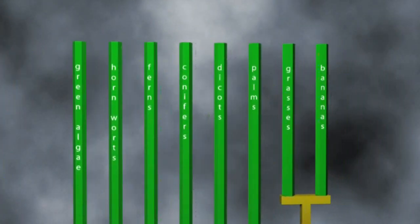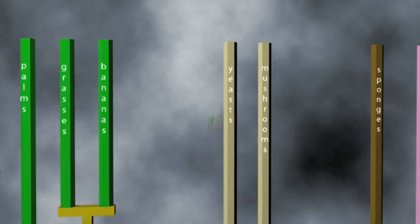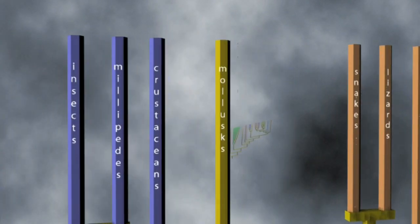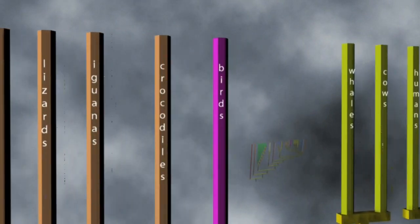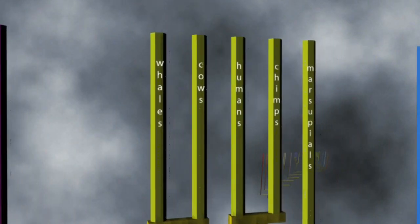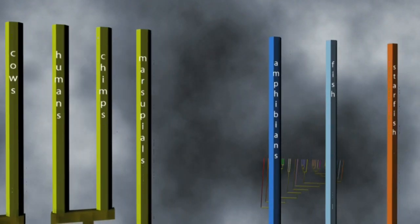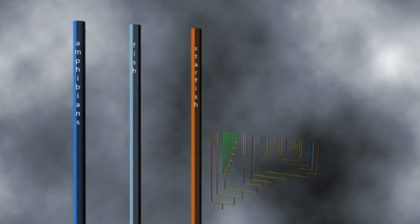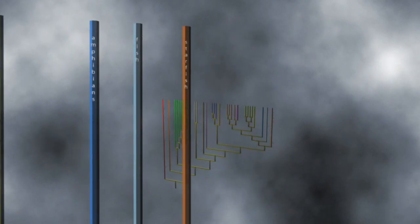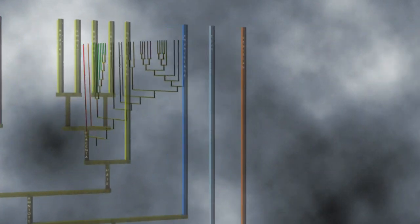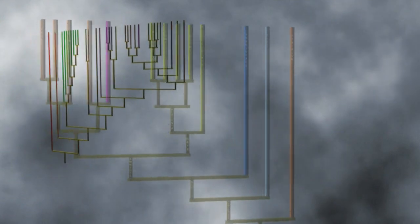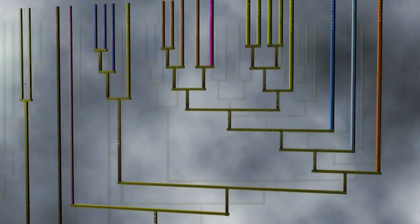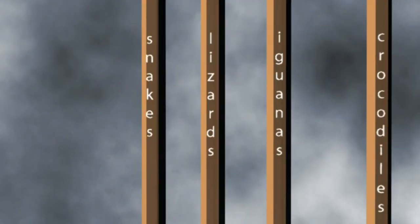When you look at a phylogenic tree of life diagram derived from the idea of common descent, you immediately notice the pattern of groups within groups. This nesting is unique to the common descent idea. The statistical analysis of these characteristics of organisms grouped with this idea is unusually successful.